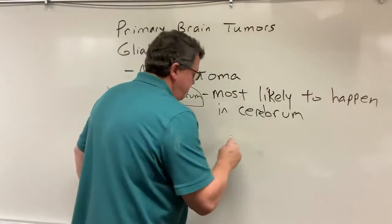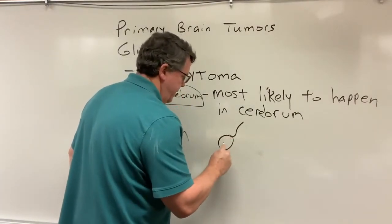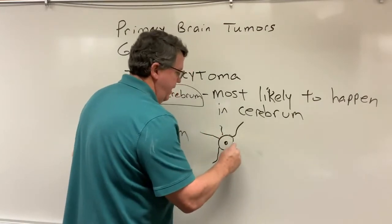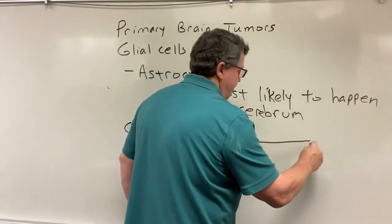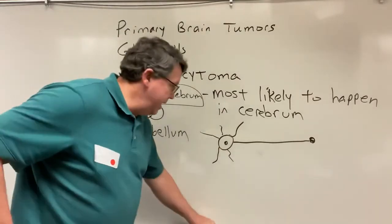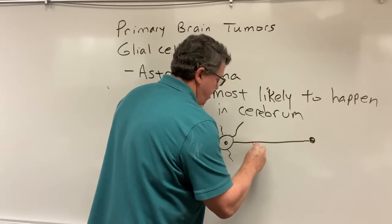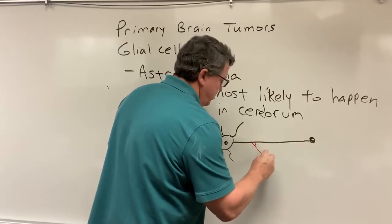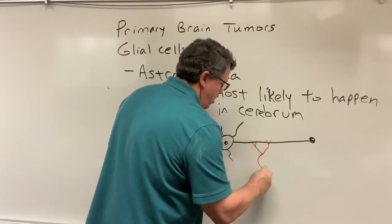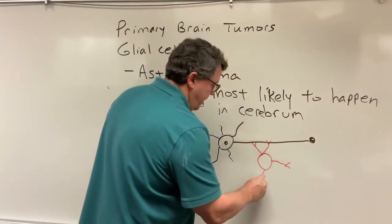So let's say this is my nerve, with dendrites and an axon coming off of it. The astrocyte, because it's star-shaped, basically helps to hold this in place. It can even connect to another nerve — holding multiple nerves in place.